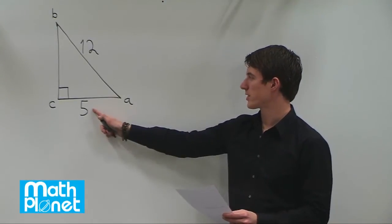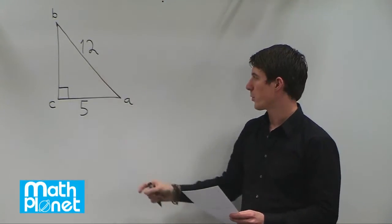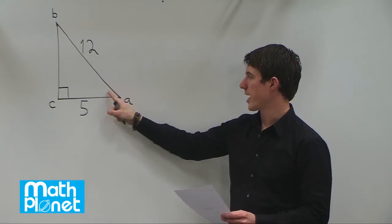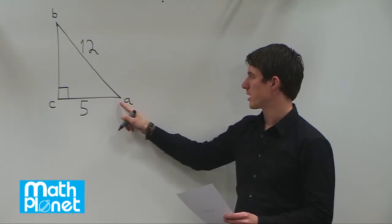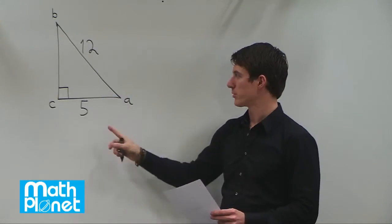In this triangle, we're given the lengths of this side and this side, and if we want to find, for example, this angle A, we have to use a trigonometric function. So let's think about which trigonometric function we want to use.